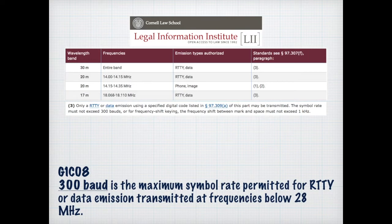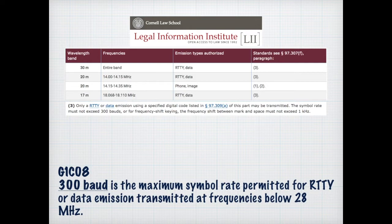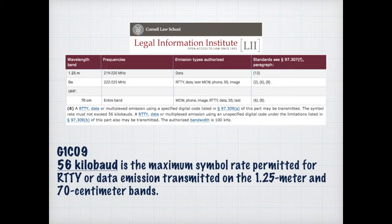3,500 baud is the maximum symbol rate permitted for RTTY or data transmission at frequencies below 28 megahertz. Up in the higher bands and higher frequencies, you're able to go faster. 56 kilobaud is the maximum symbol rate permitted for RTTY or data emissions transmitted on the 1.25-meter and 70-centimeter bands.